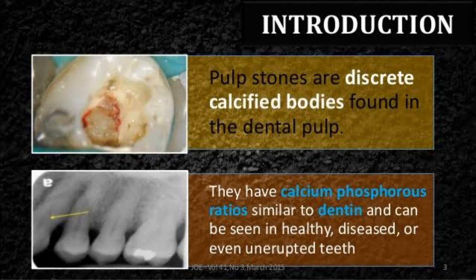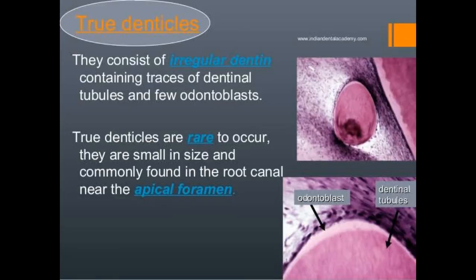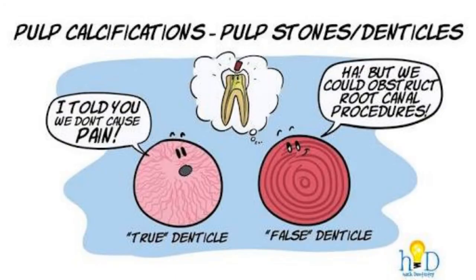Now let's see the second short note, that is pulp stones. Pulp stones are also known as denticles and are calcified structures seen in the coronal or radicular pulp. Based on their morphology, they can be classified into true pulp stones and false pulp stones. If these pulp stones resemble the dentinal tubules, they are called true pulp stones, and the false pulp stones appear in concentric circles. These false pulp stones form around blood vessels and around necrotic tissues.